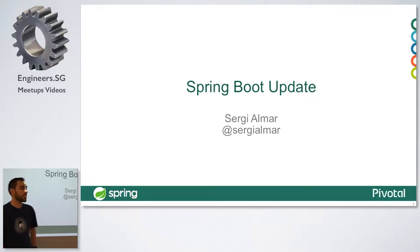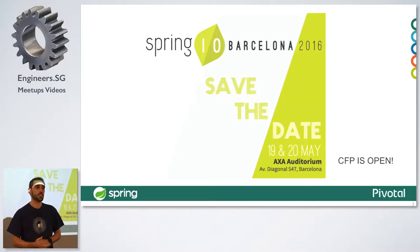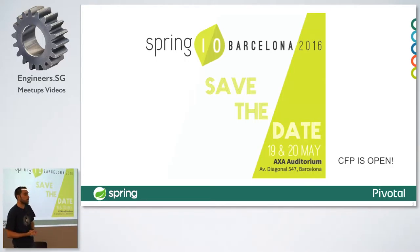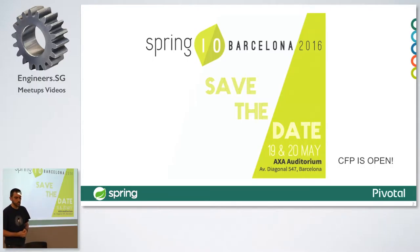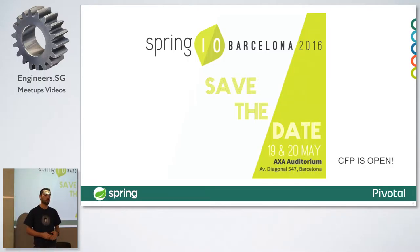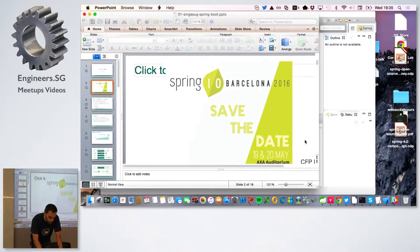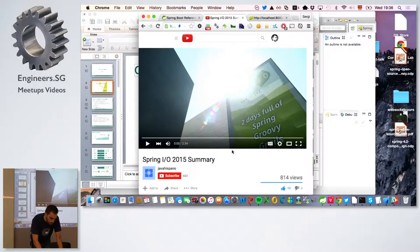Before getting started, I want to make an announcement. I'm the organizer of the Spring IO Conference — basically the biggest European conference focused on Spring. It's going to happen in Barcelona, which is my hometown, on the 19th and 20th of May. We just opened the call for papers, so go to springio.net and send your proposal. I'll pass a quick video on last year's edition.